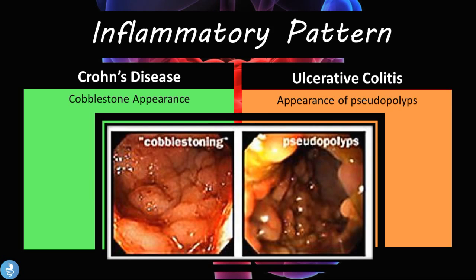The inflammatory patterns: in Crohn's disease we have the classical cobblestoning appearance, which is usually visible on capsule endoscopy. In ulcerative colitis we have the appearance of pseudopolyps, which is basically the mucosa trying to heal itself but unable to return to its original state, producing this pseudopolyp appearance.